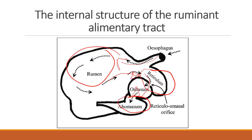The upper part of the abomasum contains glands that produce hydrochloric acid, and the lower part contains glands that produce gastric enzymes. This stomach connects to the small intestine, which is moist and smooth and contains microscopic finger-like projections called villi. These cannot be seen with the naked eye but significantly increase the absorptive ability of the intestines.